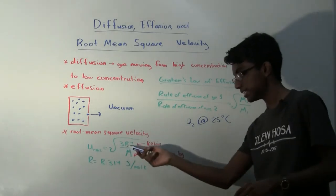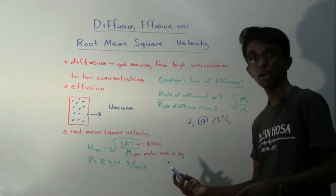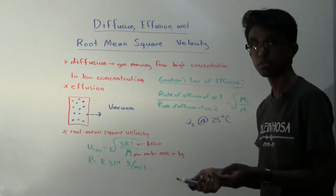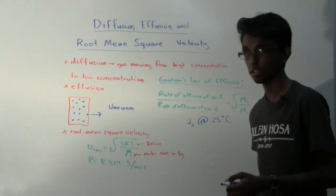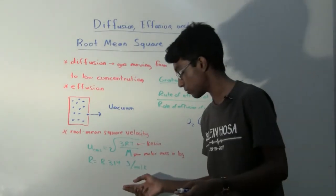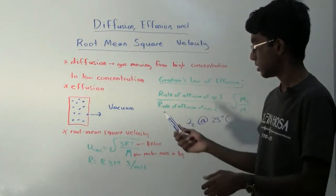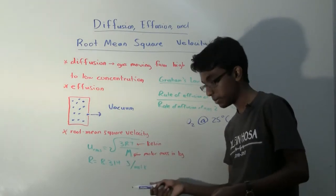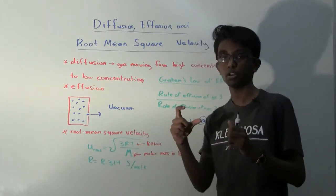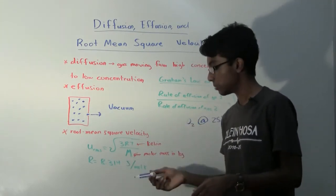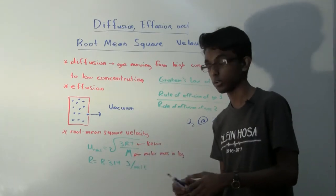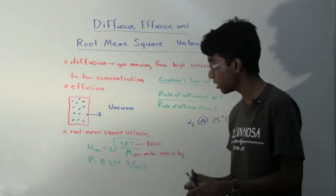The equation is 3 times the ideal gas constant. We're not going to be using the ideal gas constant that we use in PV equals nRT. We're going to use a different ideal gas constant, and that is 8.314 joules per mole Kelvin. So 3 times this ideal gas constant, 8.314. It should be on your equation sheet, but make sure you don't mistake it for 0.0821. We're going to be using 8.314.